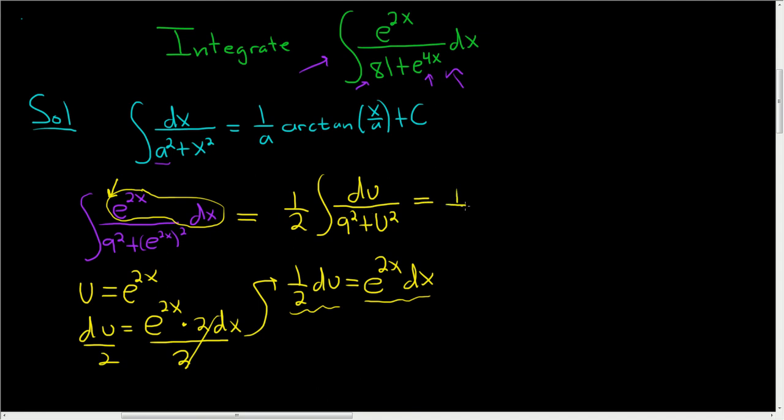So the 1 half hangs out, and then we have 1 over a, so this is 1 over 9, and then arctan of u over 9. All right, because a is 9, plus c.